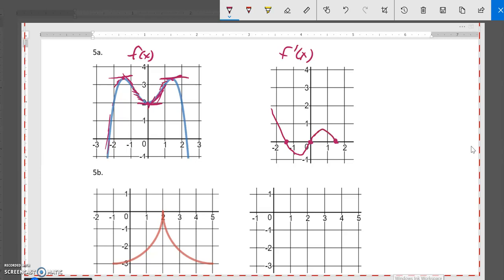So steeper, less steep, flatten back out to 0. And all of these slopes here are negative. So it'll look like that. So there's 5a.